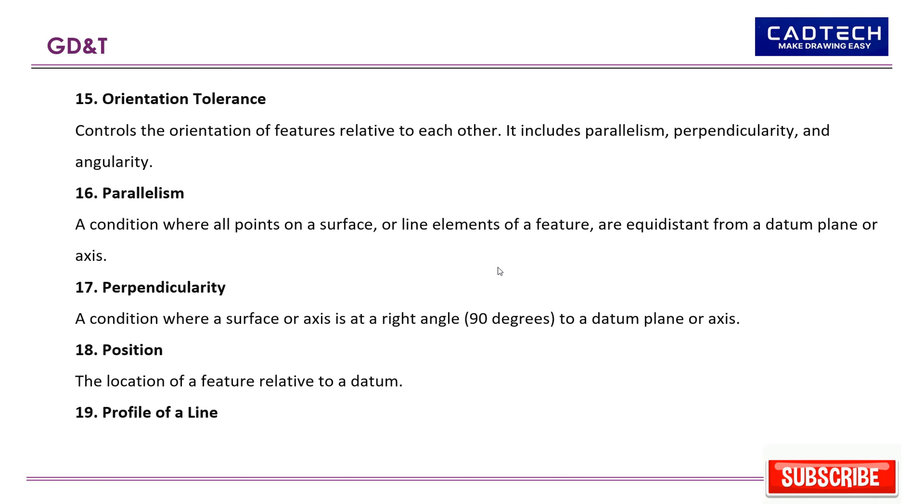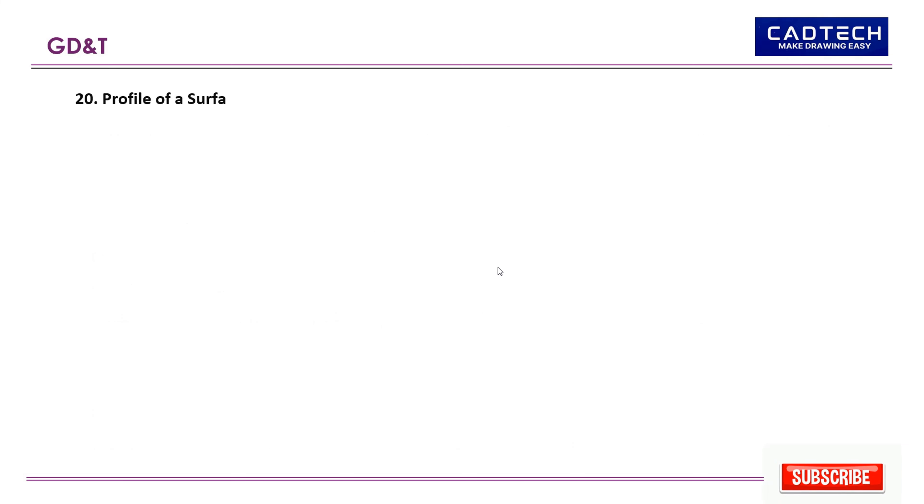19. Profile of a line: A tolerance zone around any line in a feature, usually applied to control complex curves. 20. Profile of a surface: A tolerance zone around a surface, applied to control complex shapes.